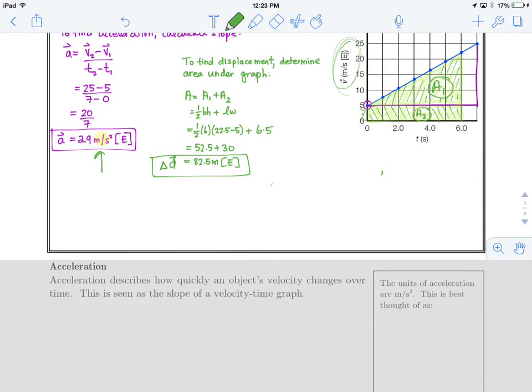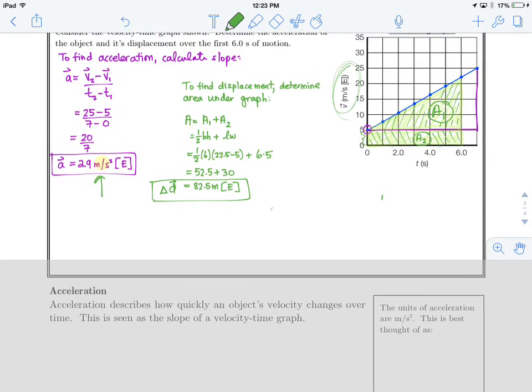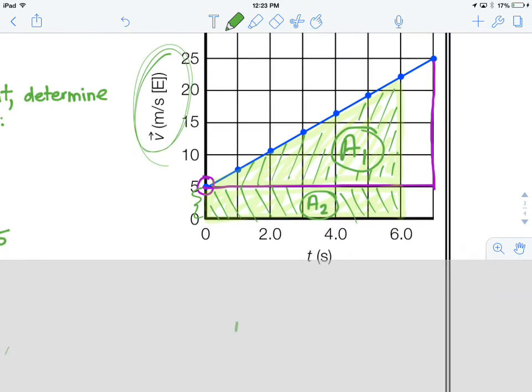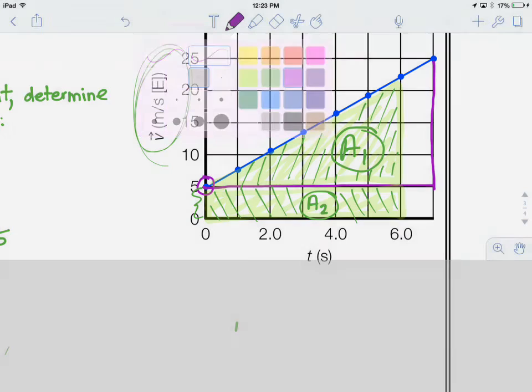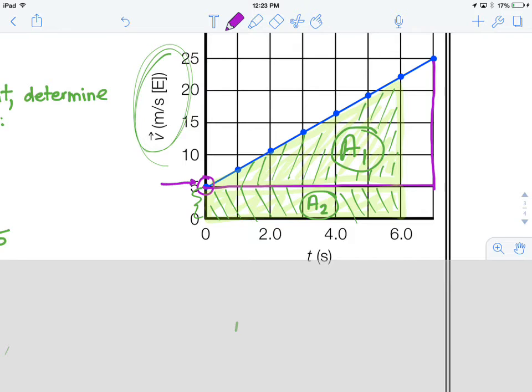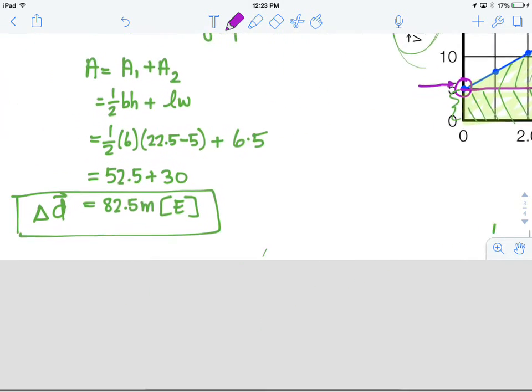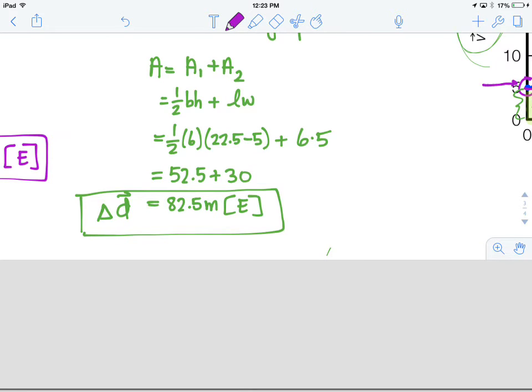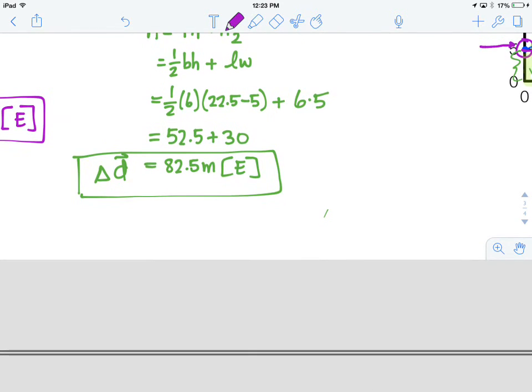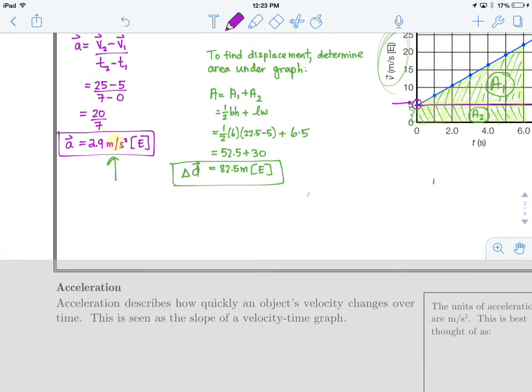And then displacement, you're going to look at the area under the curve. Now, interestingly enough, I gave you a graph that started here at this value of 5. So it kind of started not at 0. And what that meant was, was that you needed to calculate not just the area of a triangle, but also the area of a triangle, plus this little extra bit, the area of this rectangle underneath. And so when you did that, base times height, plus length times width. And you would have got 82.5 meters east, in the east direction.